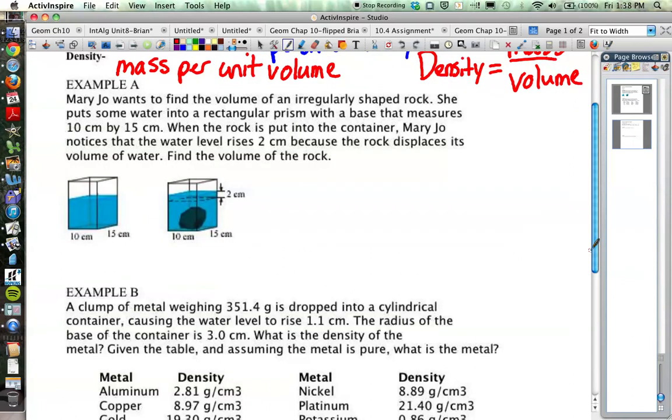Example A: Mary Jo wants to find the volume of an irregularly shaped rock. She puts some water into a rectangular prism with a base that measures 10 centimeters by 15 centimeters. When the rock is put into the container, Mary Jo notices the water level rises two centimeters because the rock displaces its volume of water. Find the volume of the rock.